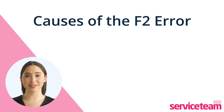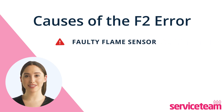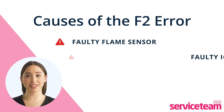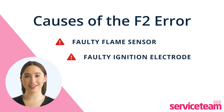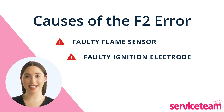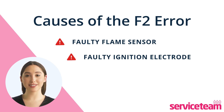Let's understand what causes the F2 error. If your boiler has a faulty flame sensor because it's dirty or not working right, it might display the F2 fault code. The second cause is a faulty ignition sensor, which is essential for the combustion process in a gas boiler. It is typically located near the burner and creates a spark to ignite the gas. If it's affected by dirt, misalignment, physical damage, a faulty control board, or insufficient voltage supply, it triggers the F2 error.